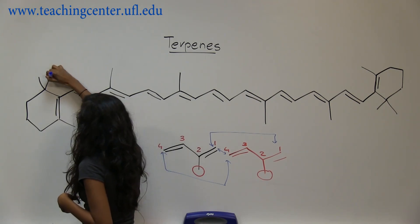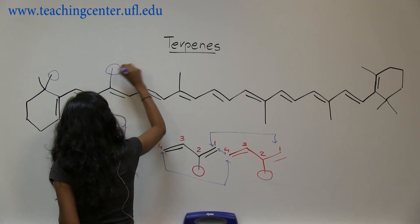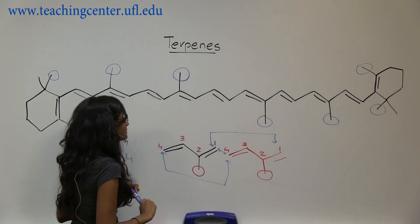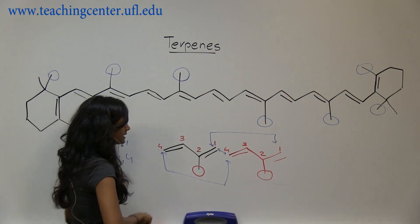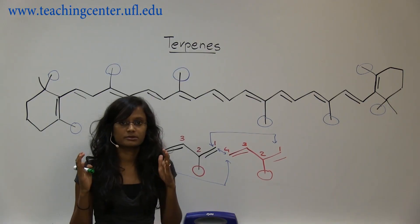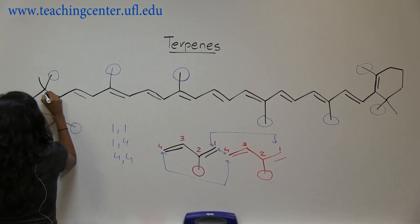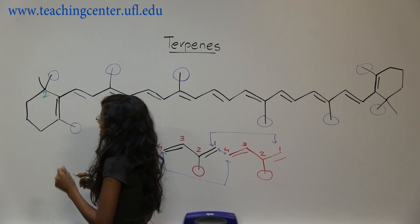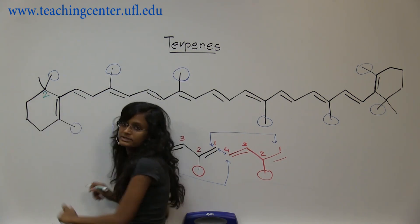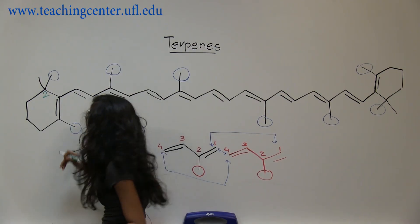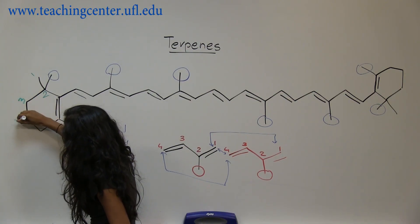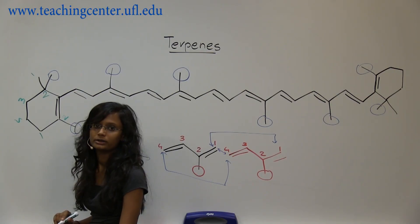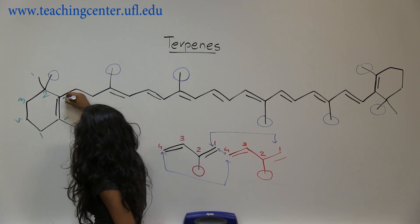Coming back to the terpene molecule — there are two methyls here, so I'll just pick one. There's a methyl here, a methyl there, a methyl there, and a methyl again. I'm going to start from this side and keep numbering: one, two, three, four — as long as number two has a methyl on it. This is number two, so I'll mark that. I can either start from there or go around the circle, and I'll follow the linkage from there.